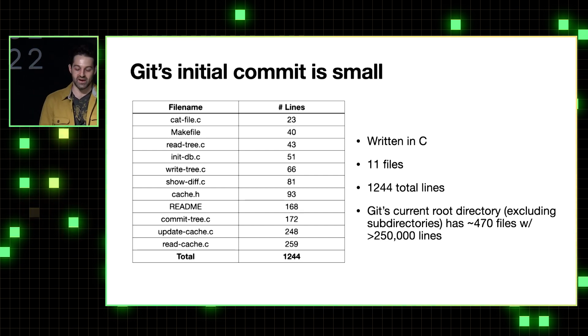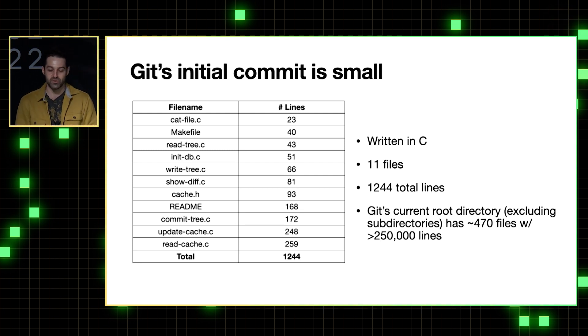And I've sorted them here by number of lines per file. So Git's initial commit is written in C. And it's made up entirely of these 11 files, which contain just 1,244 lines. And if you compare that to Git's current root directory, so excluding all subdirectories, that has around 470 files with just over 250,000 lines.